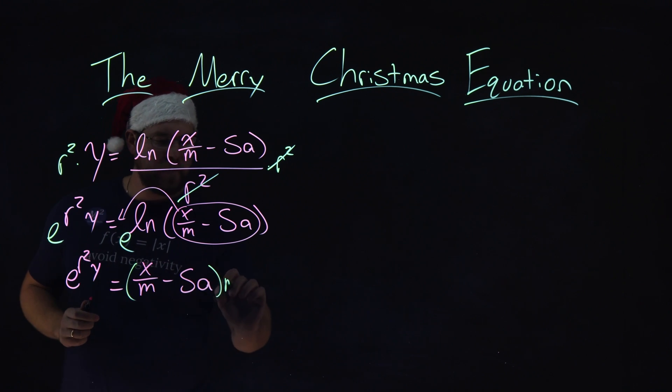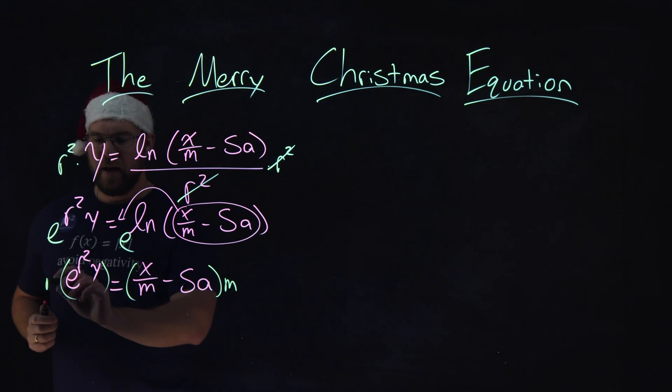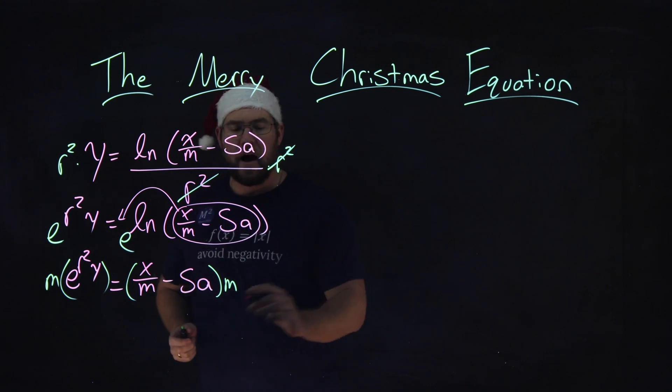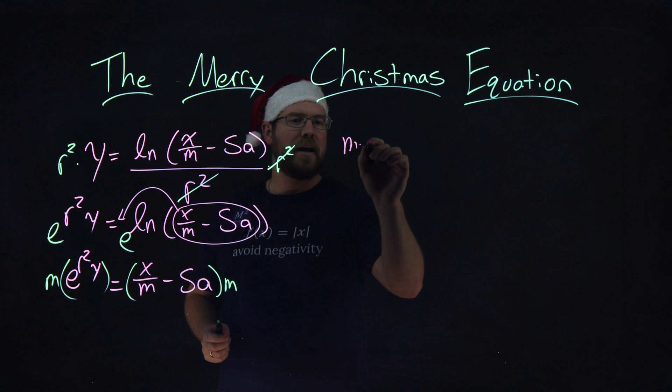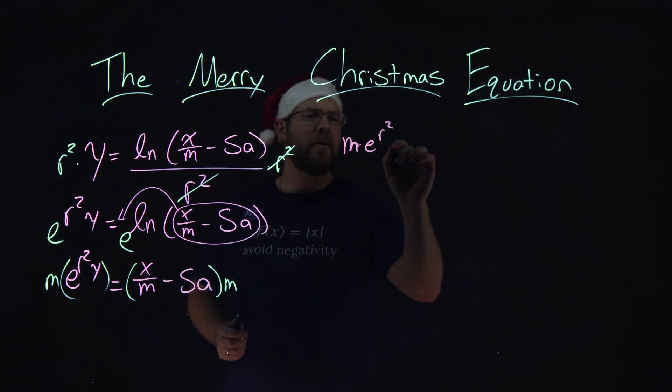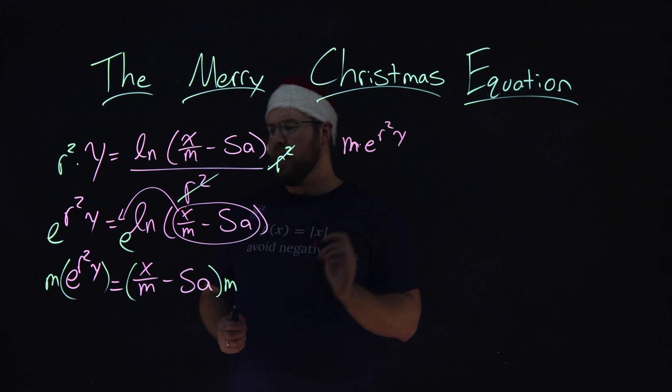So, I'm going to multiply both sides by just an m. So, what do I get here? I'm going to rewrite that up here. I have an m times, if I can write the m, e to the r squared y power equals.